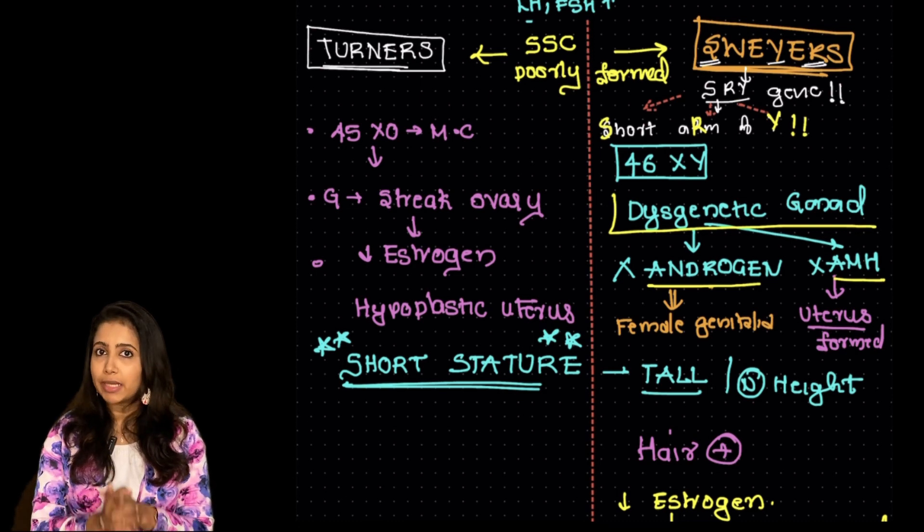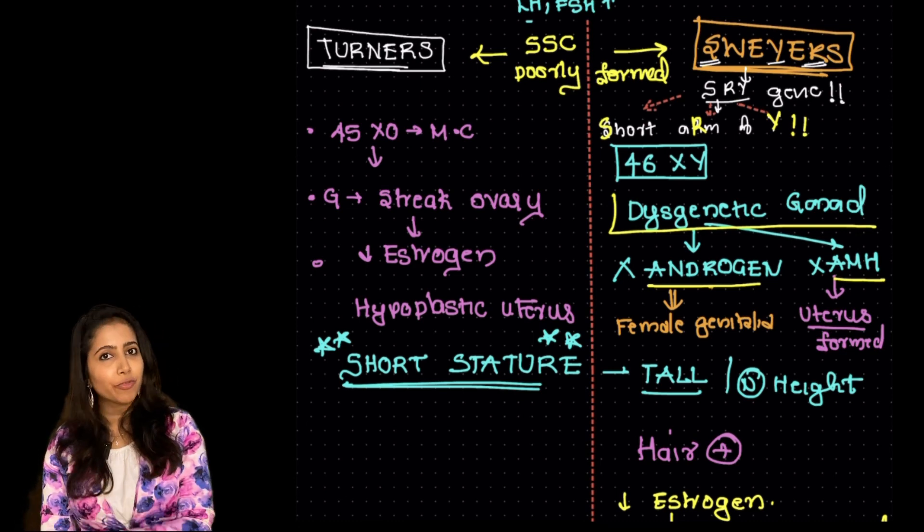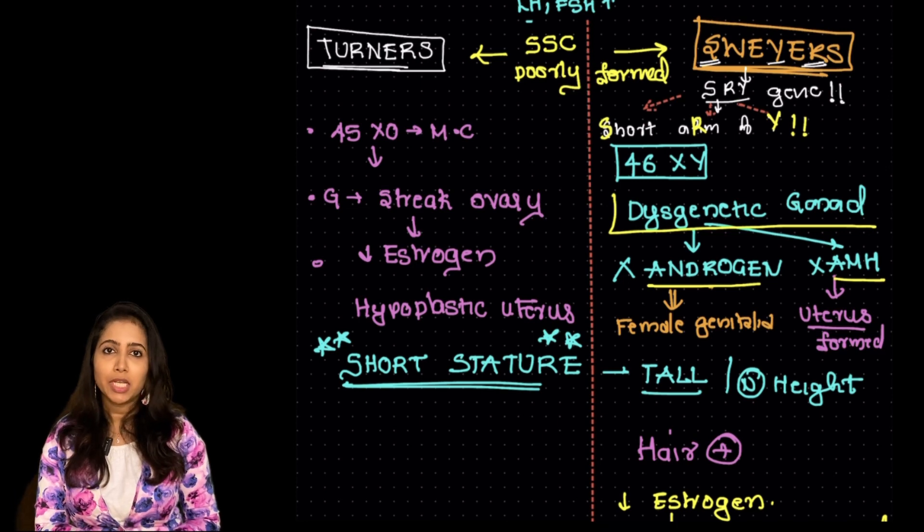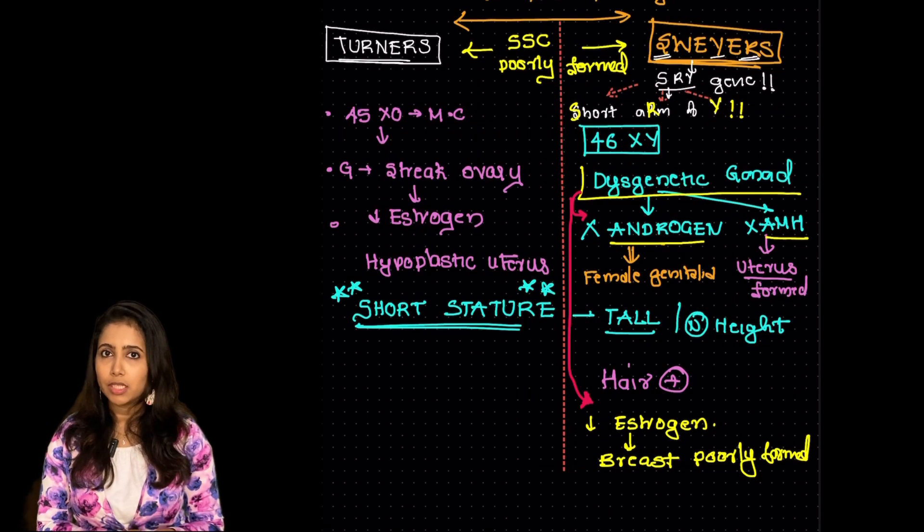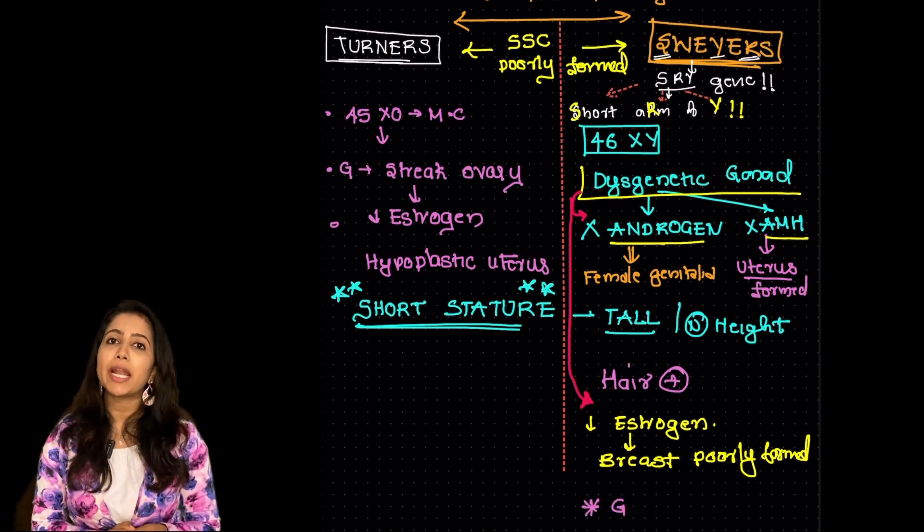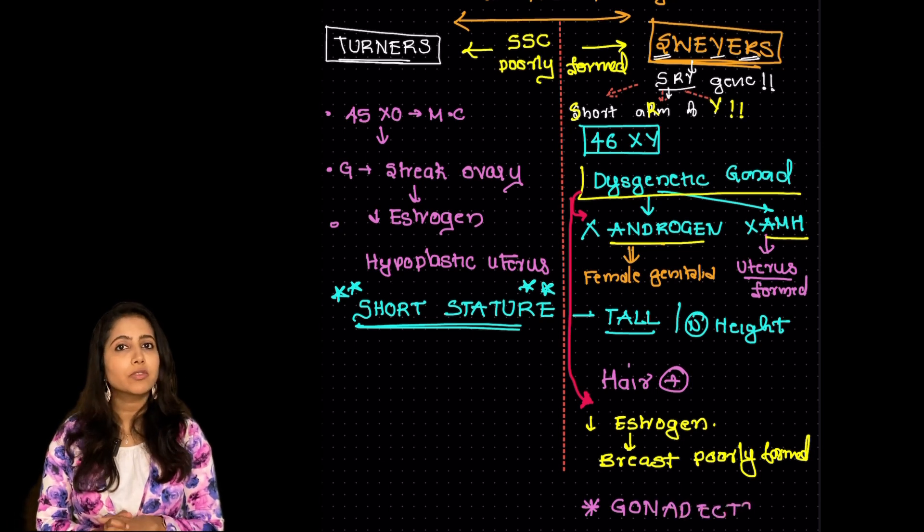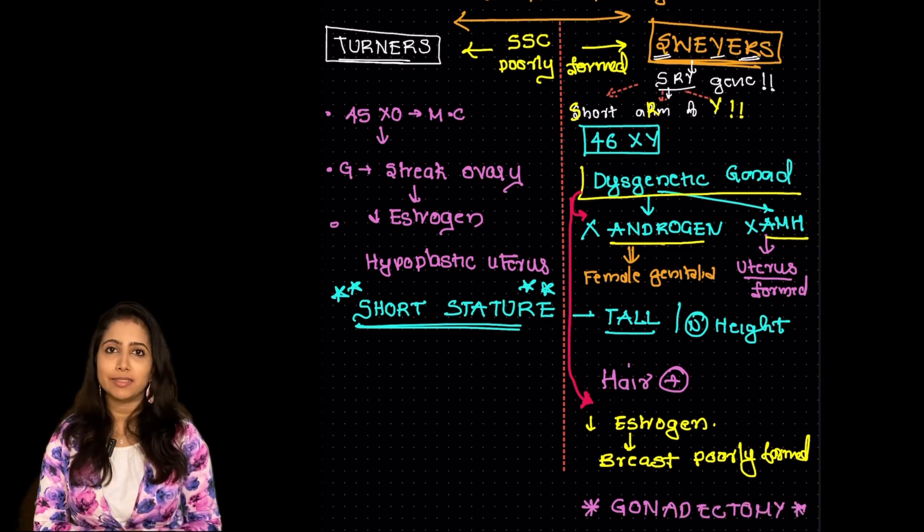So any male karyotype with the presence of uterus think of Swyer's syndrome. It's very important to note that the gonadectomy has to be done as soon as possible because the risk of malignancy is very high in this.